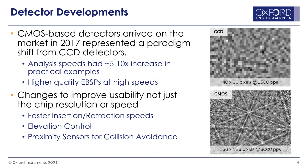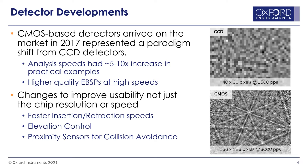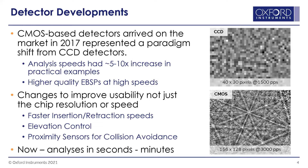More importantly, you can use higher-quality EBSPs at high speeds. The CCD pattern can be indexed, but you kind of wonder if voodoo is involved versus the CMOS pattern at 156 by 128 — and look at the speed difference: twice as fast with a better-looking pattern. The hardware improvement was just amazing. We've also added usability adjustments: the system moves in and out faster, elevation control for geology samples with larger puck mounts and thin sections, and proximity sensors for collision points. We're talking about analyses in seconds to minutes, not hours.